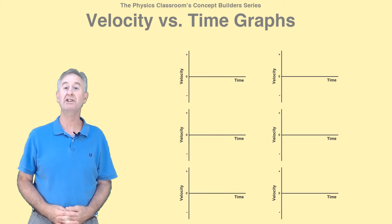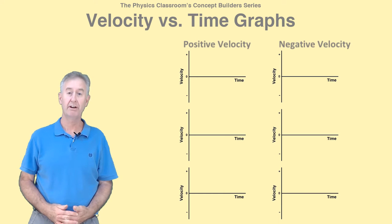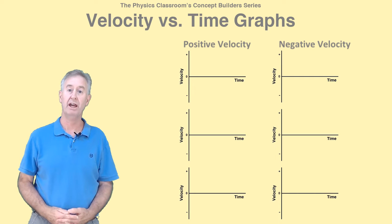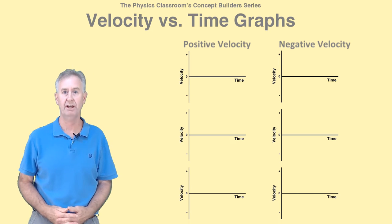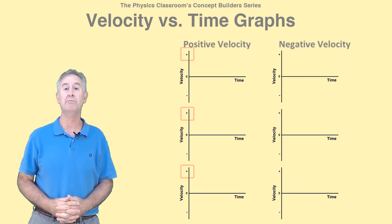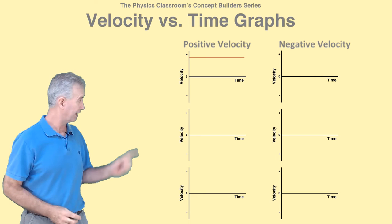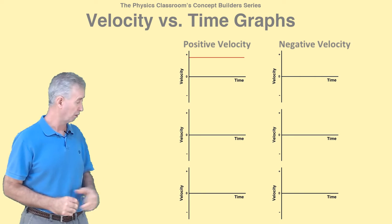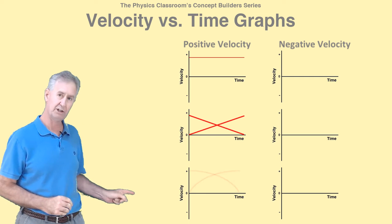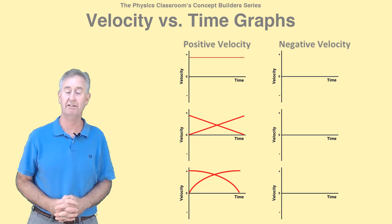So let's discuss the rules for VT graphs, beginning with the rule for distinguishing an object moving in the positive direction from one moving in the negative direction. An object moving in the positive direction has a positive velocity. And using our math noodle, we would reason that such an object would be represented by a line in the positive region of the graph, like this horizontal line, or these diagonal lines, or even these curved lines. Each of these objects has a positive velocity.